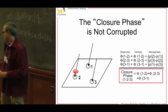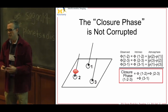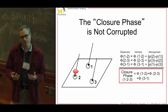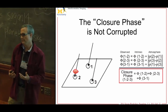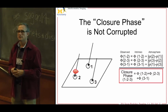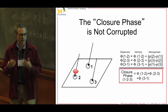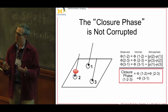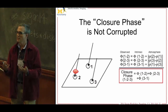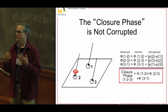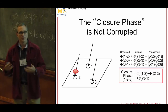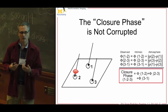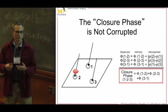The closure phase is not such an elegant thing by itself. You can model fit to it — think of it as linear algebra: you want all the individual phases, but you're given some combinations. You have some information but can't invert the problem — the matrix is not invertible — but you can constrain models.